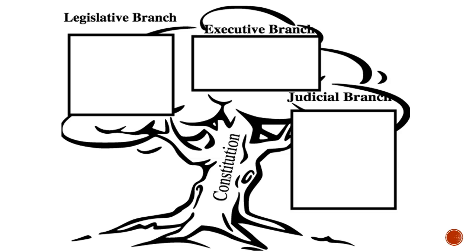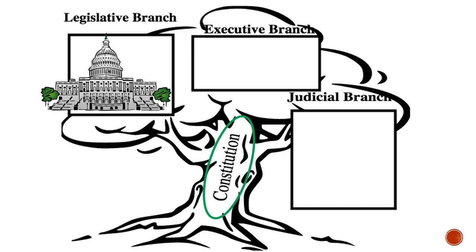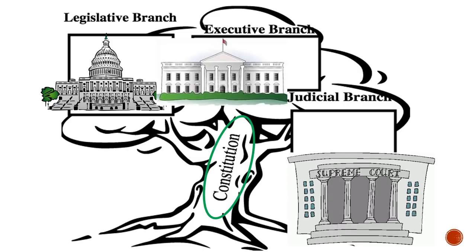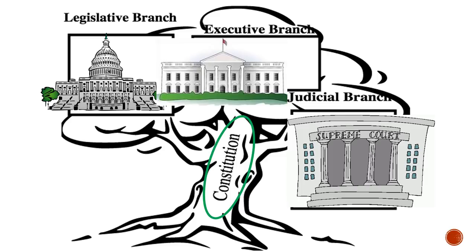You've seen this image before — the three branches of government in the shape of a tree. The trunk represents the Constitution, the law of the land, that holds up all the other branches. One branch is the legislative branch, which makes the laws. The second is the executive branch, which carries out the laws by enforcing them and putting them into action. The third is the judicial branch, which interprets the laws and decides if they are fair.